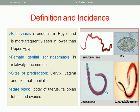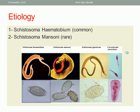Female Genital Schistosomiasis is relatively uncommon. The sites of infection include the cervix, the vagina, and at the midterm other rare sites such as the body of the uterus, the fallopian tubes, and the ovaries. We have three types of schistosoma: hematobium, mansoni, and japonicum. Hematobium and mansoni are more common in Africa; japonicum is more common in Asia. The most common cause for genital tract problems is Schistosoma hematobium, while mansoni is less common.